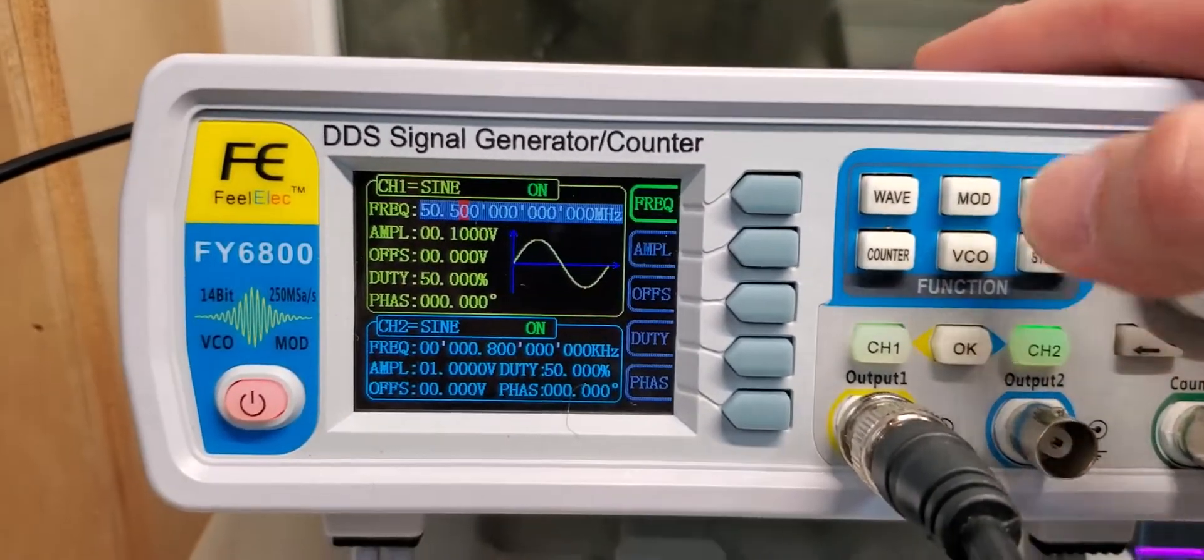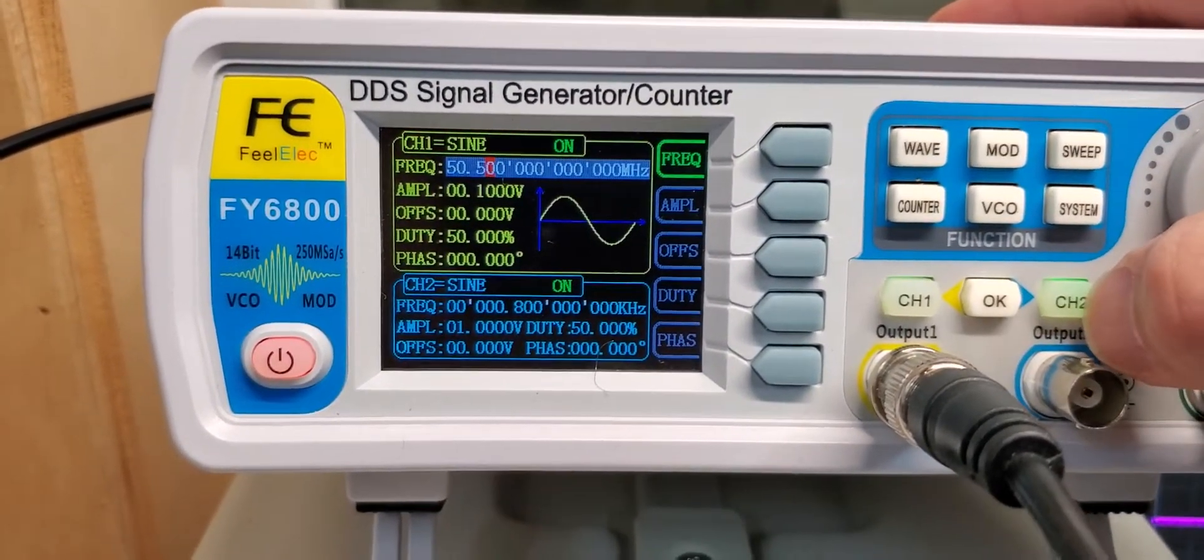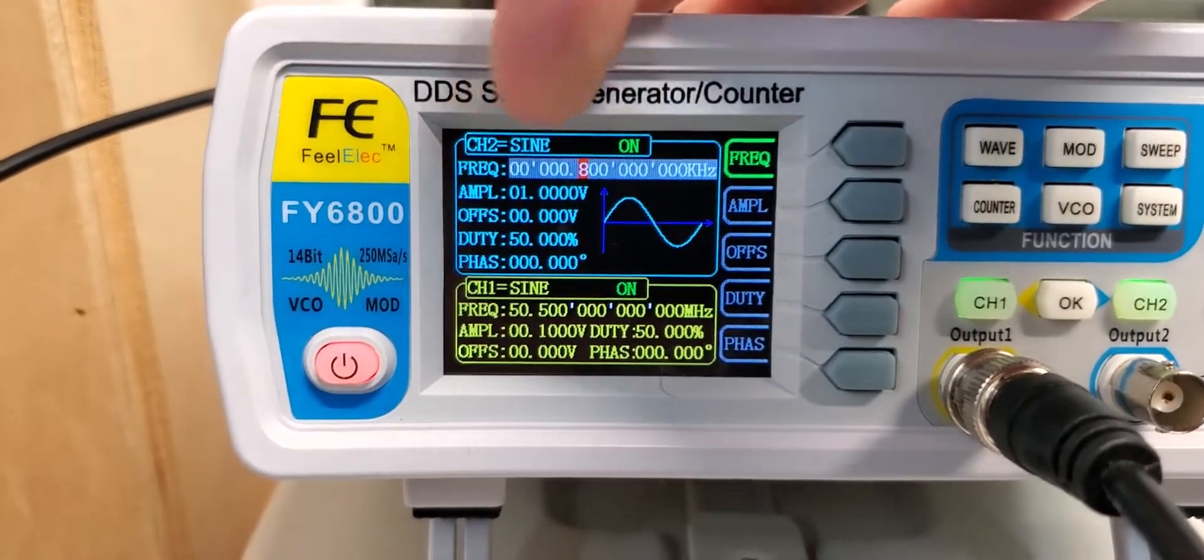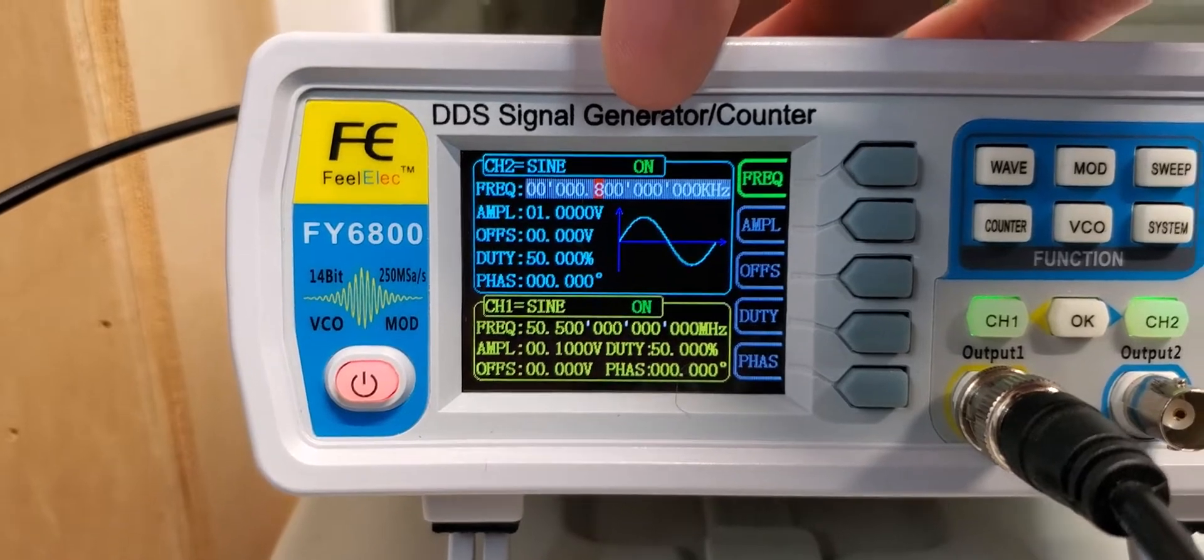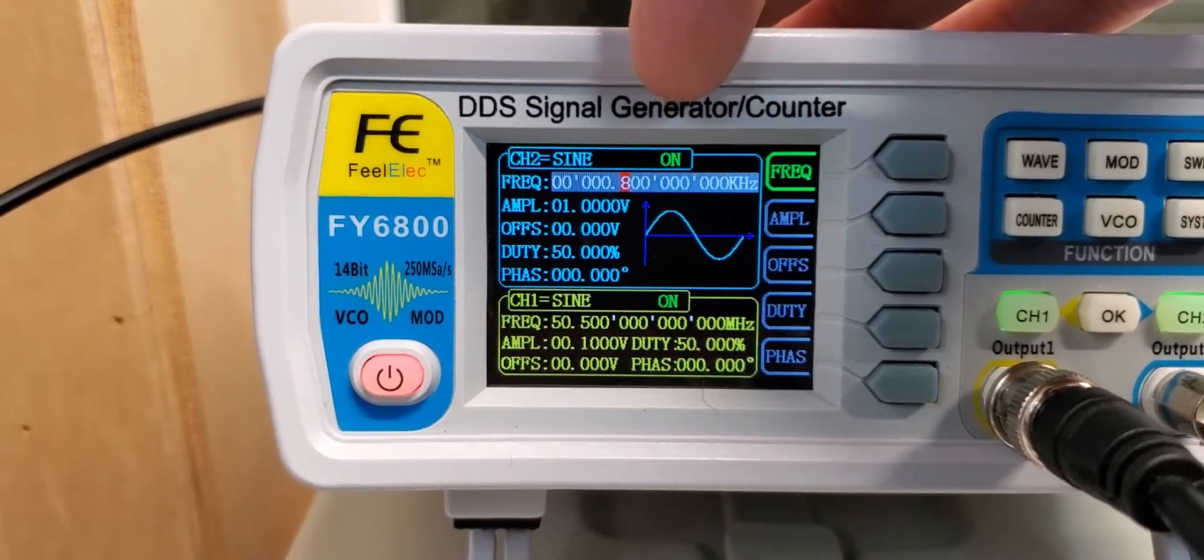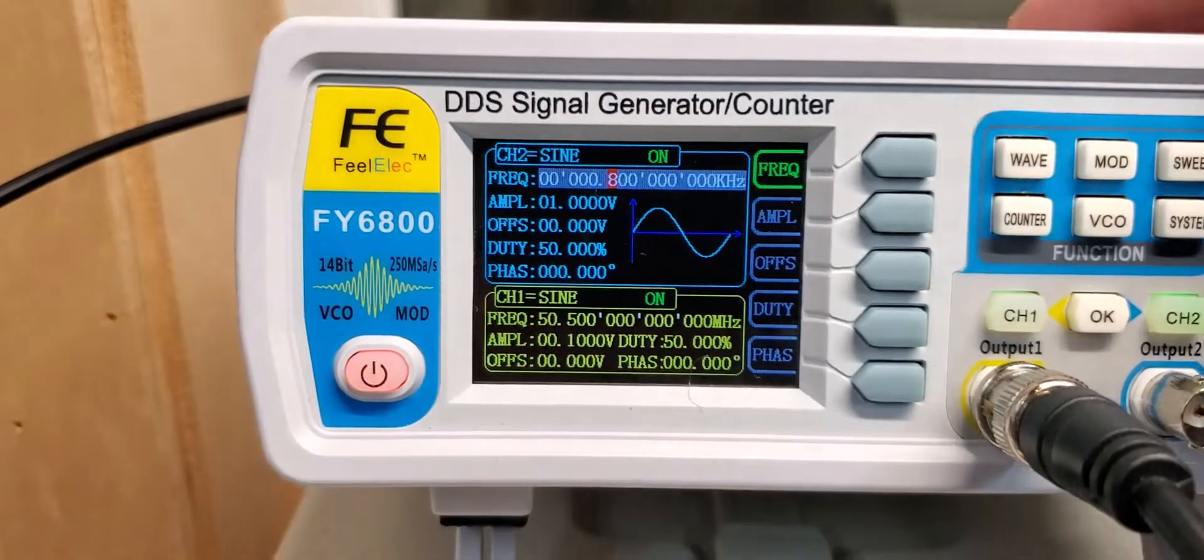That's pretty boring so what we're going to do now is over at channel 2 I set it up to be at 800 hertz. That's an audible frequency range.